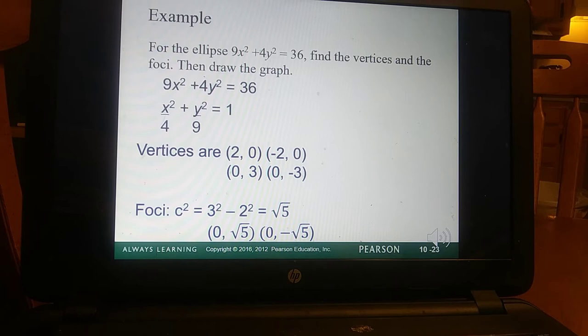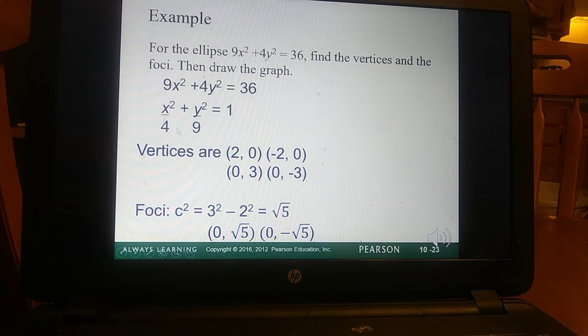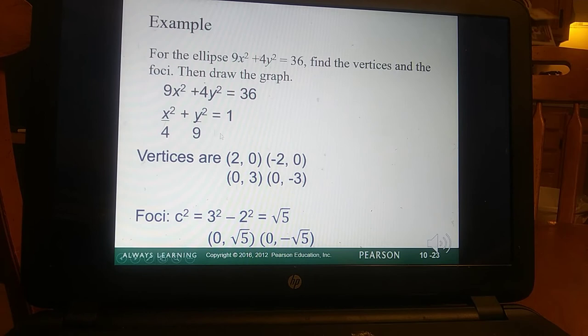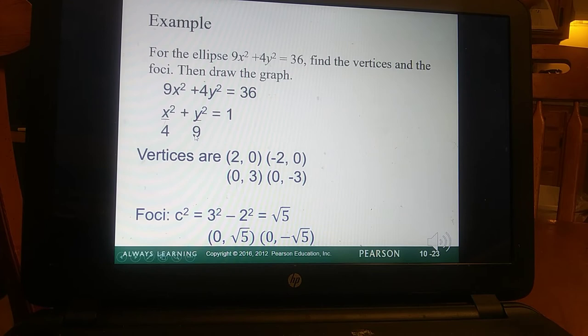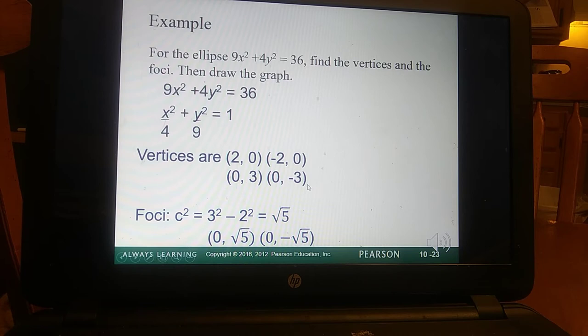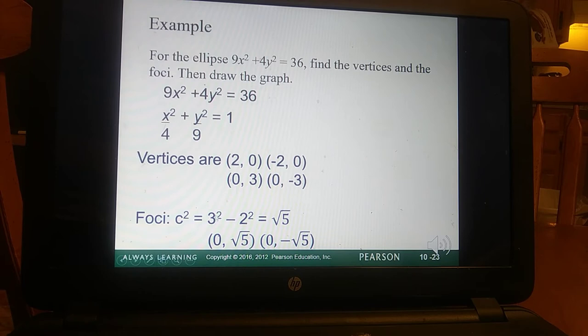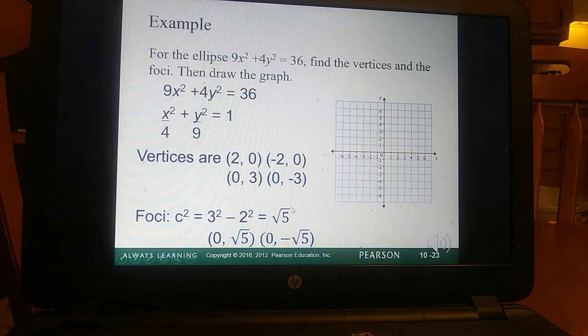So from that, we can pull the vertices. So our vertices are going to be, for the major axis, would be actually down here. This is listed a little different. But I'll have to switch it up in the PowerPoint. Sorry about that. So your major axis is going to fall with respect to y. So y squared, or a squared is equal to 9, so that means a is equal to 3. So this is going to be our major axis. This is going to be our minor axis, and the 2 comes from the 4. So to find the foci, we're going to do c squared equals a squared minus b squared. So we have 3 squared minus 2 squared, and that gives us square root 5. So here's our 2 foci.